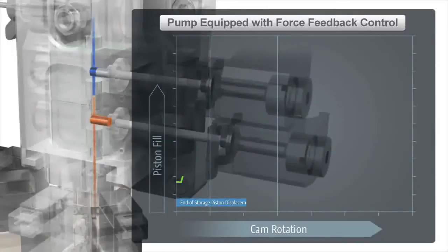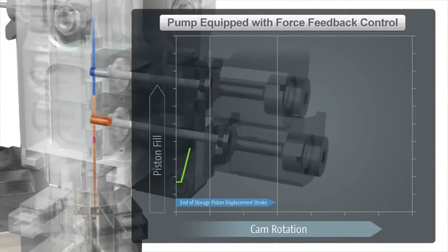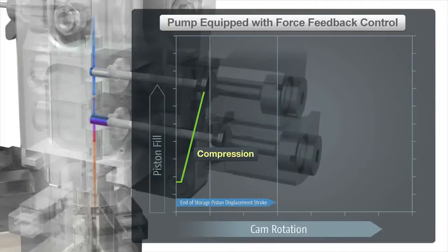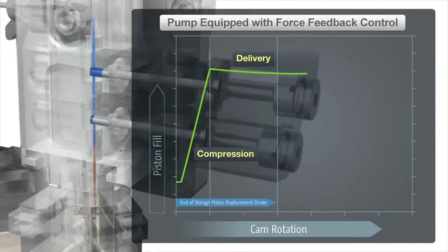The measured force is proportional to the actual compressibility of the solvent. Therefore, any variations in compressibility due to changes in mobile phase composition, temperature, etc., are accounted for during each piston stroke.